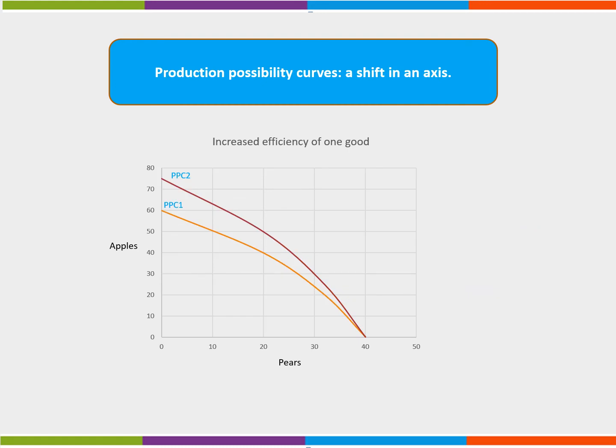If the production of one good becomes more efficient, there will be a shift in one axis of the PPC. The diagram illustrates a situation where the production of apples has become more efficient. Here, an increase in the productivity of producing apples has led to a movement of the PPC from PPC1 to PPC2. If the production of both apples and pears improved, the PPC would shift rather than tilt from one axis. Pause the video and see if you can illustrate this diagrammatically.